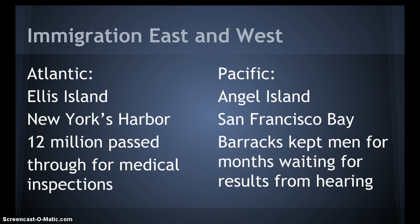There are two waves — east and west. The Atlantic wave came into New York Harbor, and Ellis Island processed immigrants after 1892. You should know 12 million passed through Ellis Island for medical inspections. Sometimes they'd be sent back to Europe if they were marked for a mental disability, heart conditions, or a scalp issue.